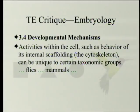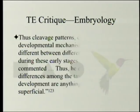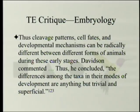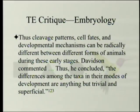Developmental mechanisms: activities within the cell such as behavior of its internal scaffolding — the cytoskeleton — can be unique to certain taxonomic groups, as illustrated by the example of flies and mammals. Thus cleavage patterns, cell fates, and developmental mechanisms can be radically different between different forms of animals during early stages. As Davidson concluded: 'The differences among the taxa in their modes of development are anything but trivial and superficial.'